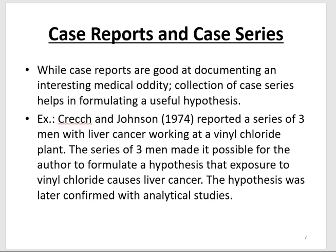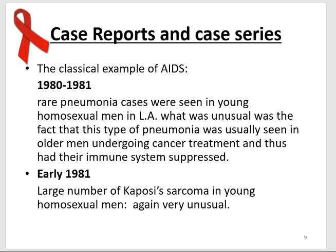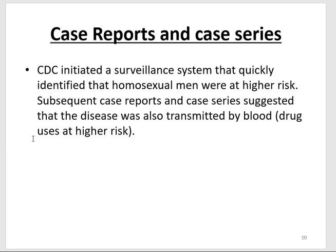The classical example of case reports and case series comes from AIDS in 1980 to 1981, when rare pneumonia cases were seen in young homosexual men in Los Angeles. What was unusual was that this type of pneumonia was typically seen in older men undergoing cancer treatment whose immune systems were suppressed. Also in 1981, a larger number of Kaposi's sarcoma cases appeared in young homosexual men — again, very unusual. The CDC then initiated a surveillance system that quickly identified the pattern.